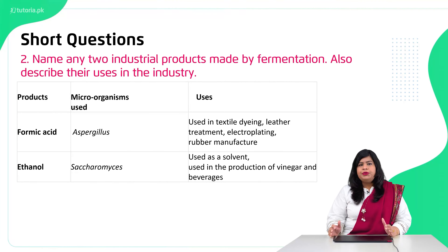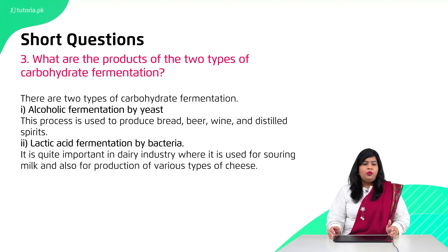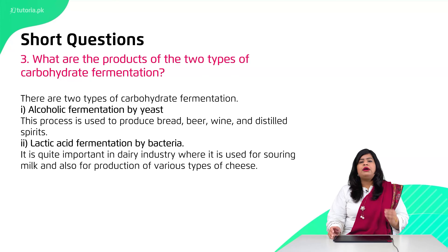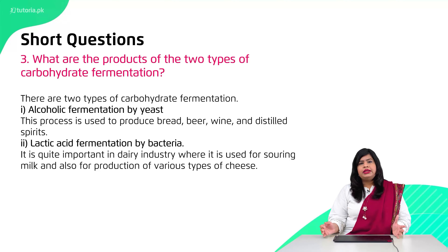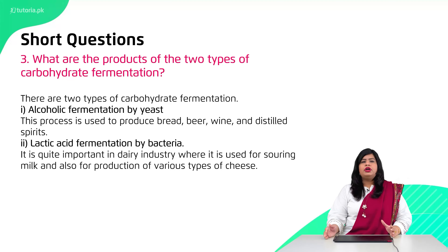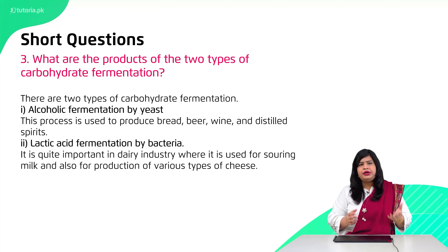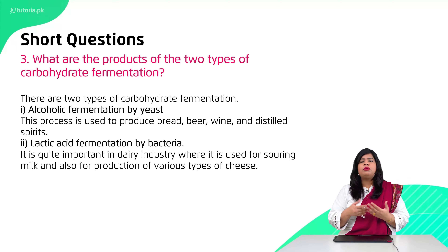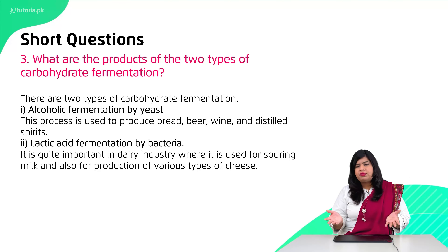The next question is: What are the products of the two types of carbohydrate fermentation? The two types of fermentation are: first, alcoholic fermentation, and second, lactic acid fermentation. When it comes to alcoholic fermentation, it is carried out by yeast, and we use its products as bread, beer, wine, and distilled spirits.